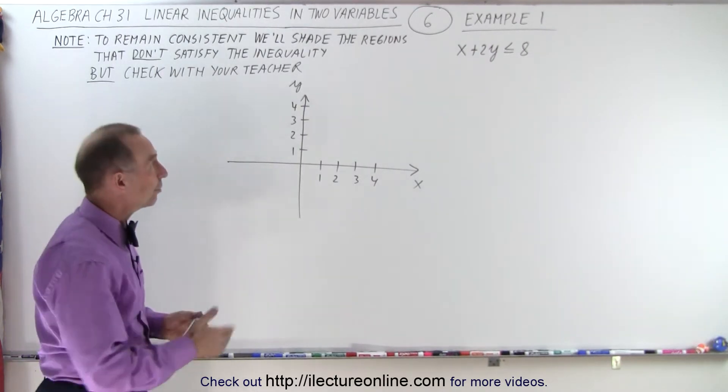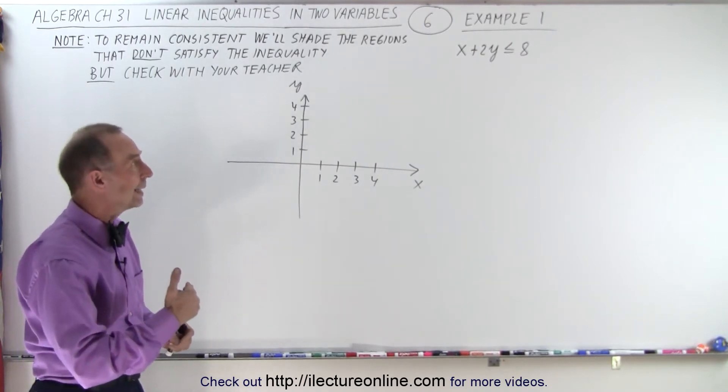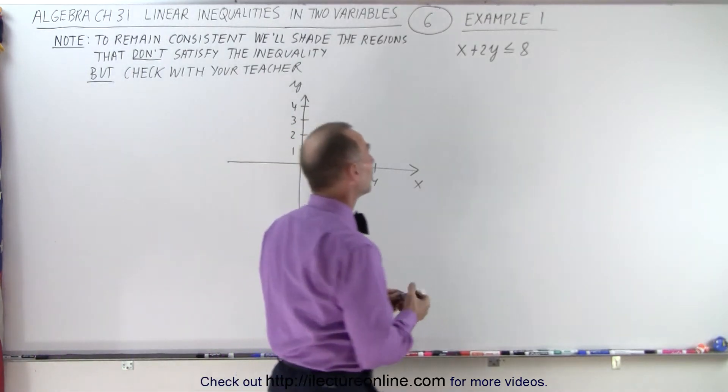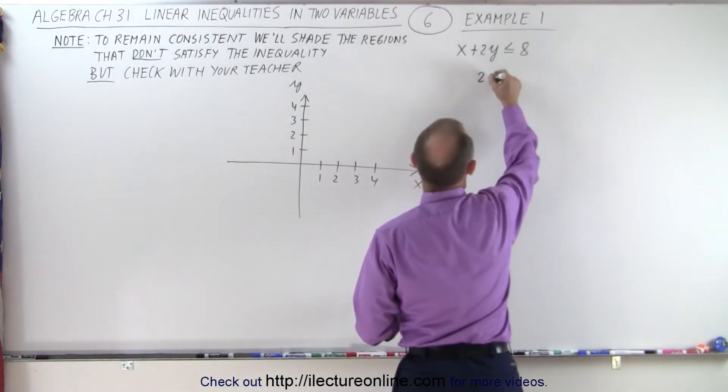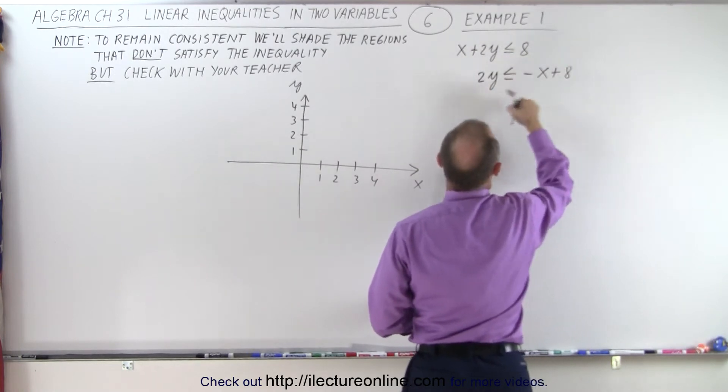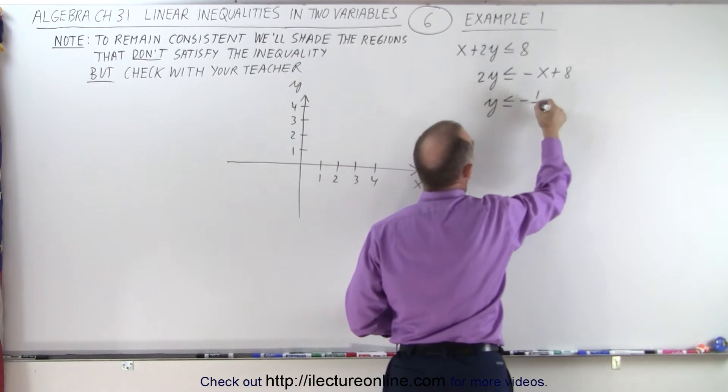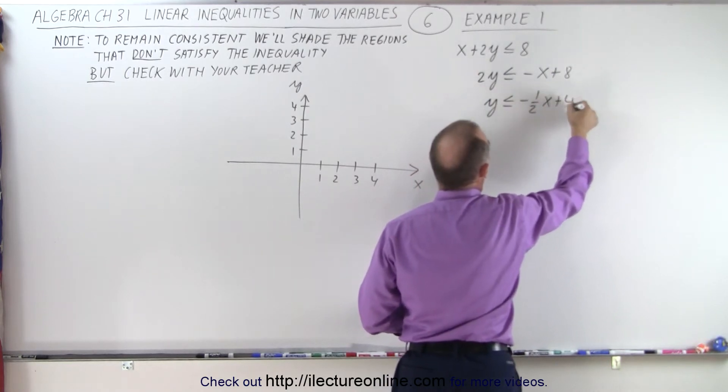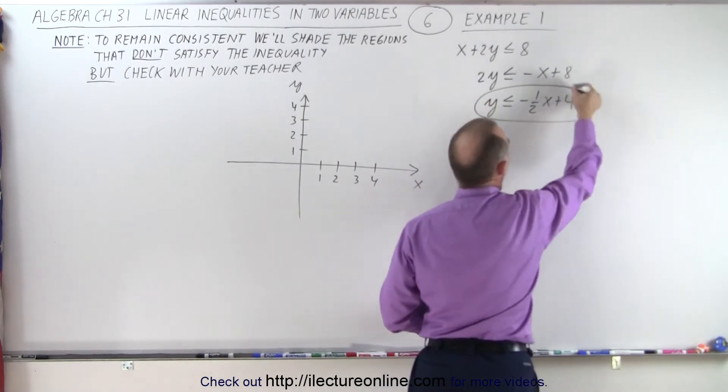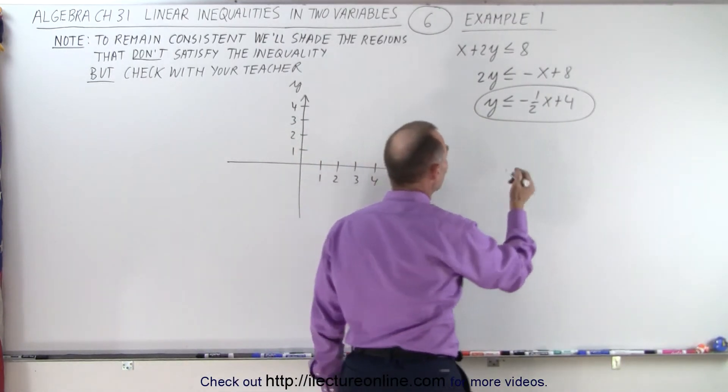Following the steps, we're given an inequality. The first thing to do is to put it into the form y equals mx plus b with the inequality symbol. So here we have 2y ≤ -x + 8, and then divide both sides by 2. We get y ≤ -1/2x + 4. This is the proper form of the inequality because that makes it easy to change it to an equation.